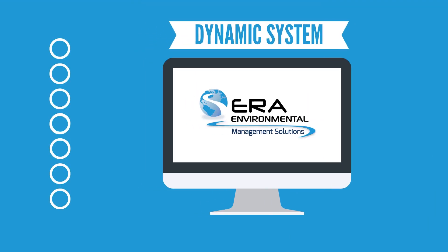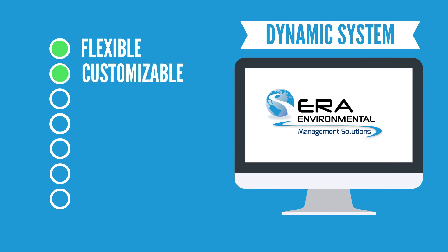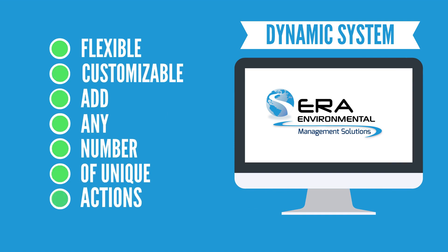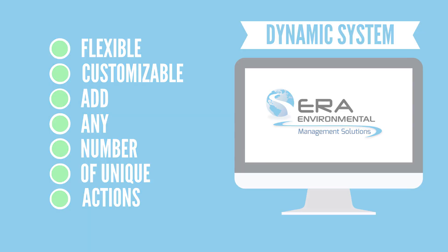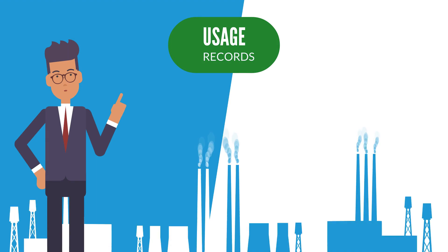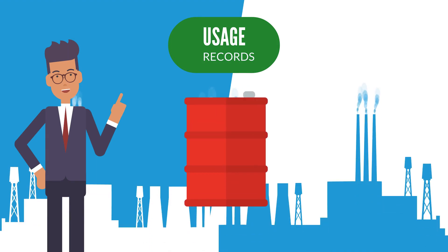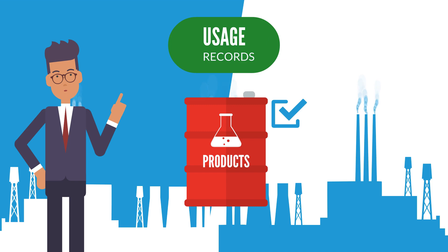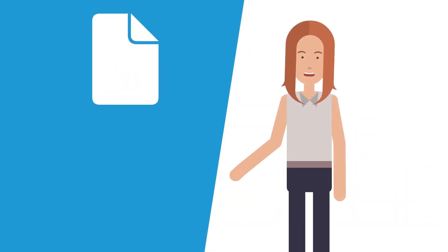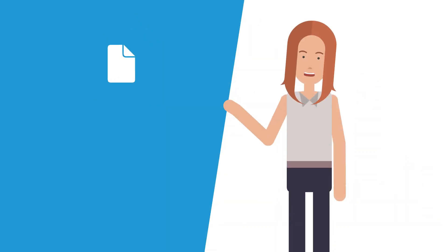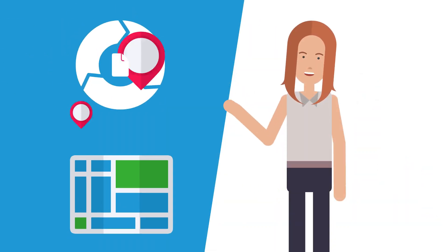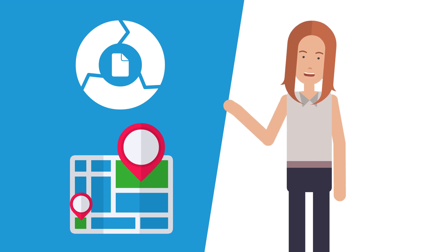ERA's dynamic system is flexible and customizable and can add any number of unique actions, like usage records. At my facility, we know exactly when a container is used and the amount of chemicals or products that are left in the container when a process is complete. We can also log any descriptive information, such as the process and location of the container's usage.